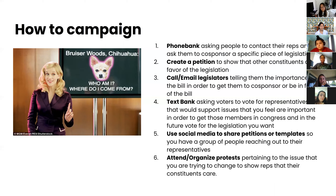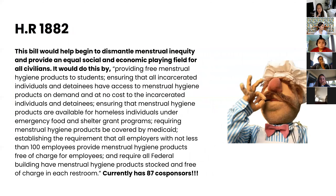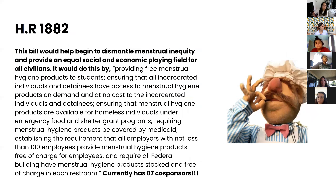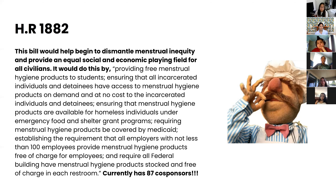HR 1882 is probably one of the most important pieces of legislation in a while. This bill would begin to dismantle menstrual inequity by providing free menstrual hygiene products to students; ensuring all incarcerated individuals and detainees have access to menstrual hygiene products on demand at no cost; ensuring menstrual hygiene products are available for homeless individuals under emergency food and shelter grant programs; requiring Medicaid coverage of menstrual hygiene products; requiring all employers with 100 or more employees to provide menstrual hygiene products free of charge; and requiring all federal buildings to stock menstrual hygiene products free of charge in each restroom. It currently has 87 co-sponsors.